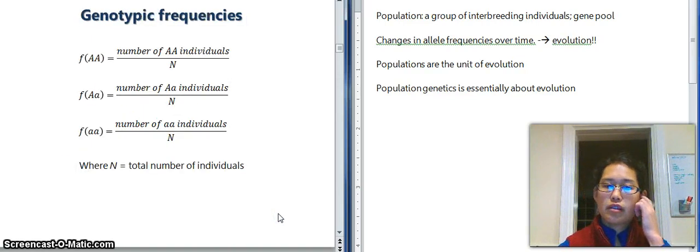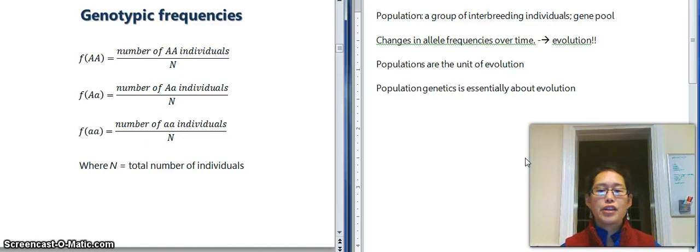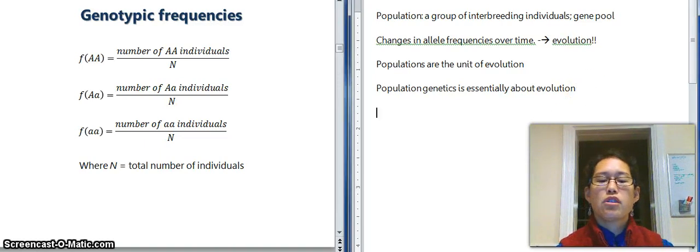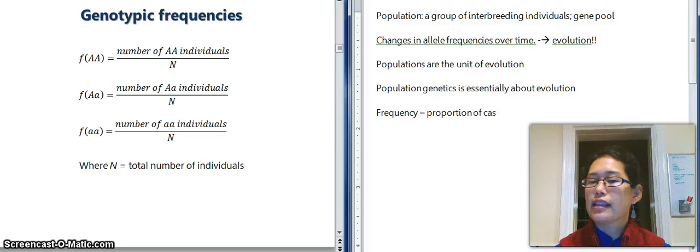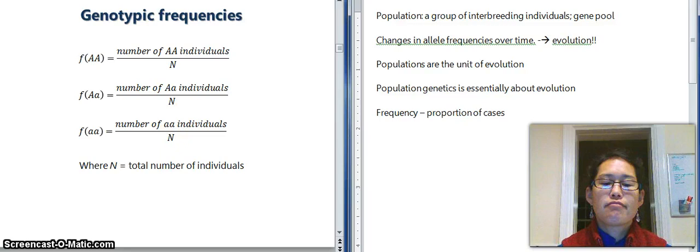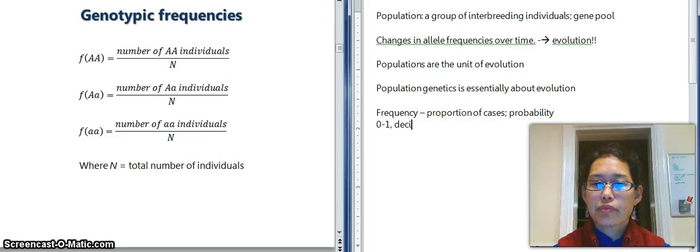Okay, so let's start out with measuring genotypic frequencies. So we can quantify genetic variation in a population based on frequencies of the genotypes and frequencies of the alleles. So just to review, what is a frequency? Frequency means the proportion of cases in total. So they're basically a proportion. They are also viewed as a probability. And that will come up later. All right, and they're typically from zero to one. And they're expressed as a decimal.